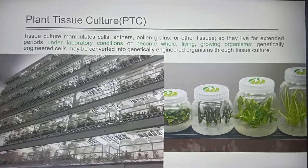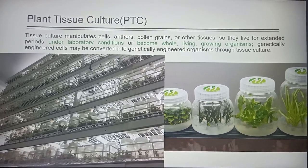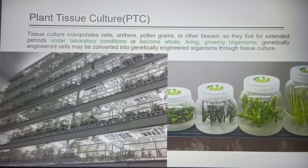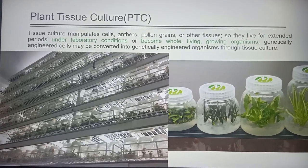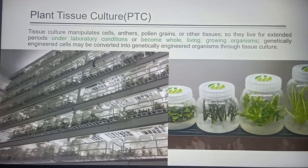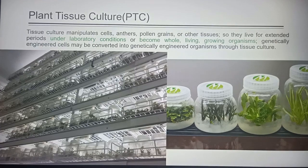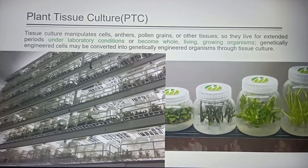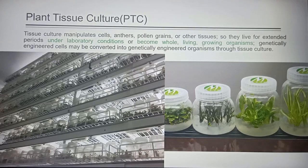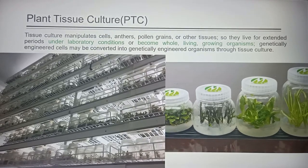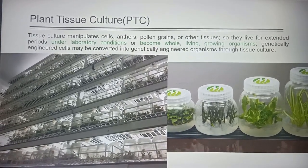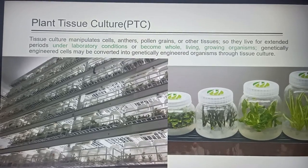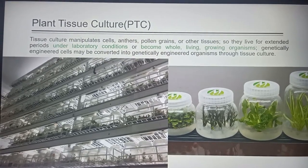We are going to talk about plant tissue culture. Plant tissue culture involves manipulating cells, pollen grains, and other tissues so they live for an extended period under laboratory conditions, or become whole living organisms. Genetically engineered cells may be converted into genetically engineered organisms through tissue culture.